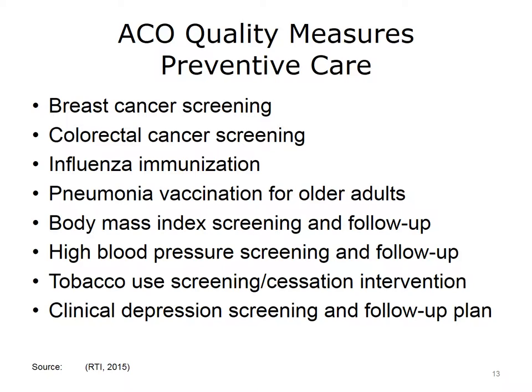The final domain of ACO quality measures focuses on preventive care. The measures include immunizations and also screenings and follow-up plans for conditions such as obesity, body mass index, tobacco use, high blood pressure, and clinical depression. These measures are typically identified through data collected in clinical information systems.